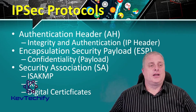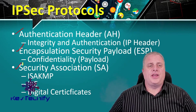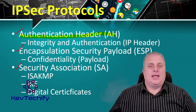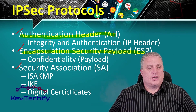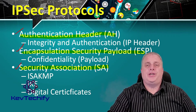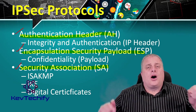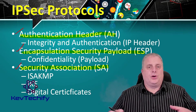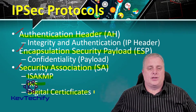The main protocols in IPsec are authentication header, encapsulation security payload, and security associations. Authentication header, also known as AH, provides integrity and authentication and secures the IP header. Encapsulation security payload, also known as ESP, provides confidentiality and secures the entire payload. Security associations, also known as SA, are an extremely important aspect of the IPsec protocol. Security associations negotiate and establish the bi-directional communication by negotiating the security parameters, the IPsec parameters, authenticating peers, exchanging keys, and generating keys. It uses ISAKAMP, IKE, and digital certificates.